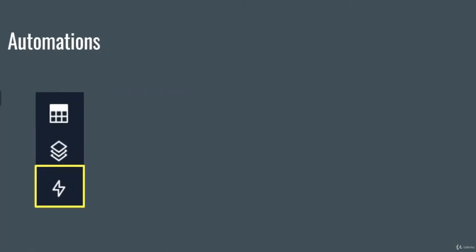The third component is automations. One thing automations can do is add, edit, or delete data automatically without any intervention by you. For example, when you submit a vacation request, it will automatically add a row in the table without you doing anything, and that allows the manager to see the new request. It's all happening automatically — that's one example of automation.